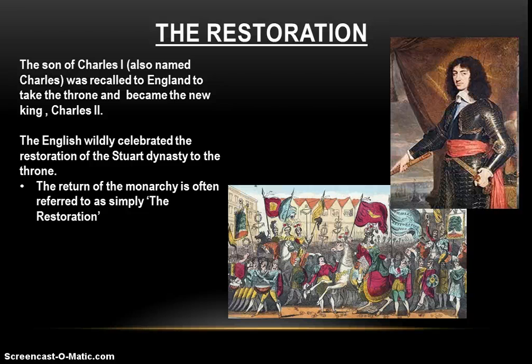The Restoration is the time period in which the Stuart dynasty is restored to the throne of England. To restore a king to the throne, you need to find the next closest relative of the old king. The oldest son of Charles I, also named Charles, gets recalled back to England from the European continent to take the throne and become the new king, Charles II. He'd been on the run ever since the English Civil War. And the English people celebrate wildly at the restoration of the Stuart dynasty to the throne.